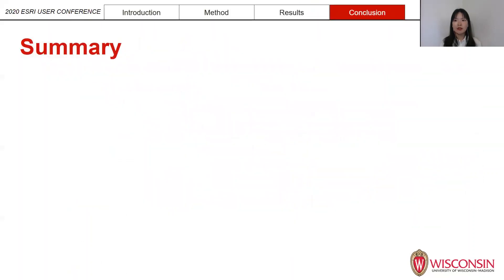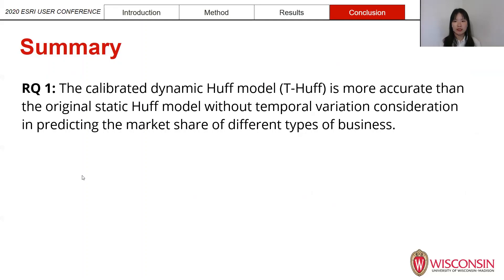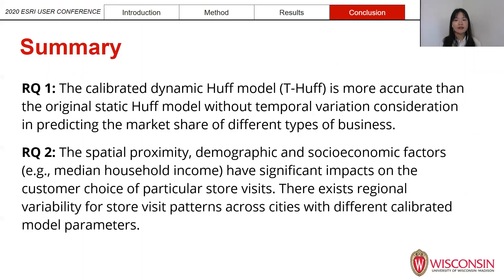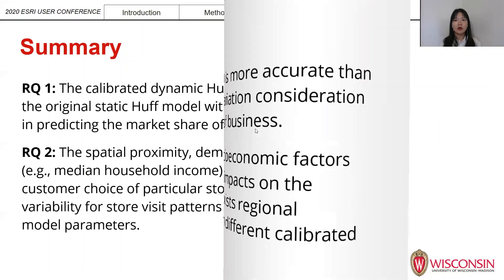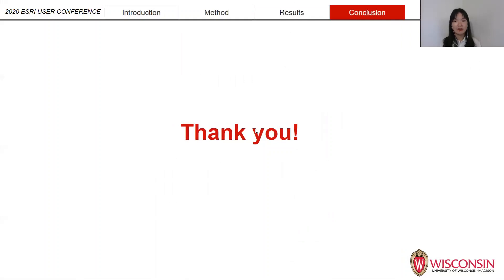To conclude and answer the two questions proposed at the beginning: the calibrated dynamic Huff model is more accurate than the traditional model in predicting the market share of different types of businesses. Secondly, spatial proximity, demographic, and socioeconomic factors do have significant impacts on customers' choice of particular stores to visit. There also exists regional variability for store business patterns as well as for different types of stores. That's all for my presentation today — thank you very much for watching.